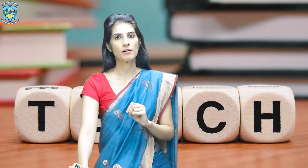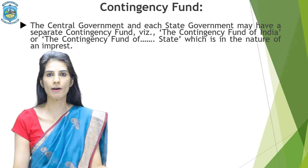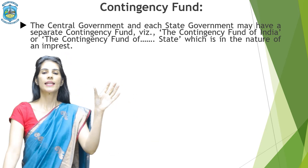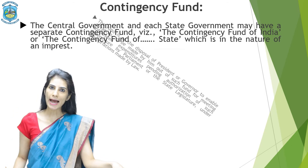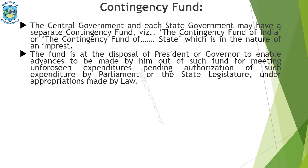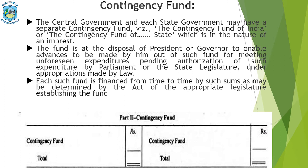Now let us discuss the second part of Government Accounting, which is the Contingency Fund. Every Union and State Government has to prepare a Contingency Fund. As the name suggests, it is for an unforeseen situation suffered by the Nation or by the State. For that, every Government has to create a fund which forms part of Government Accounting. Each such fund is financed from time to time by such sums as may be determined by the Act of the Appropriate Legislature which is establishing such a fund.